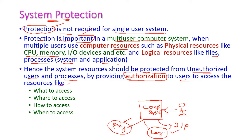What authorization can we provide? First, what to access — which resources is the user allowed to access? Second, where to access — in which place the user has to access those resources. Third, how to access, and fourth, when to access — that is the time limit. The user should follow these conditions to protect our system from unauthorized users.